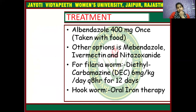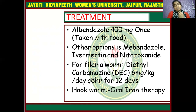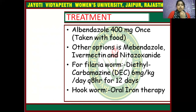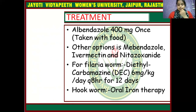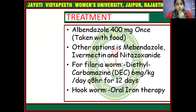Treatment is very important as worm infestation causes emaciation in children. The first-line treatment is albendazole 400 mg, taken once with food. Other options include mebendazole, ivermectin, and nitazoxanide. For filarial worms, diethylcarbamazine 6 mg per kg per day every 8 hours for 12 days is used. For hookworm, oral iron therapy is given. This is a brief treatment overview for all worm infestations.